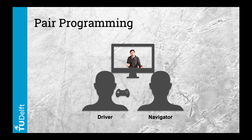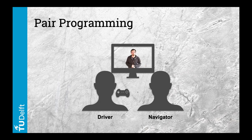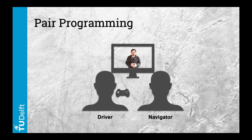With Extreme Programming, peer review is pushed to the extreme — it takes place through pair programming. In this situation, code review is actually continuous: two persons work together on the same task, ideally on the same computer.